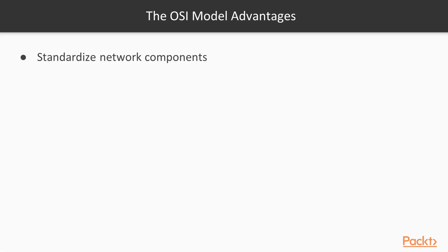So why the OSI model? What are the advantages of the OSI model? The purpose of that model is to guide vendors and developers so the digital communication products and software programs they create will simply interoperate. This will as well facilitate the comparisons among communication protocols. Most vendors involved in telecommunication make an attempt to describe their products and services in relation to the OSI model. On top of that, it became the de facto model for IT professionals and students to learn about communication over the network.